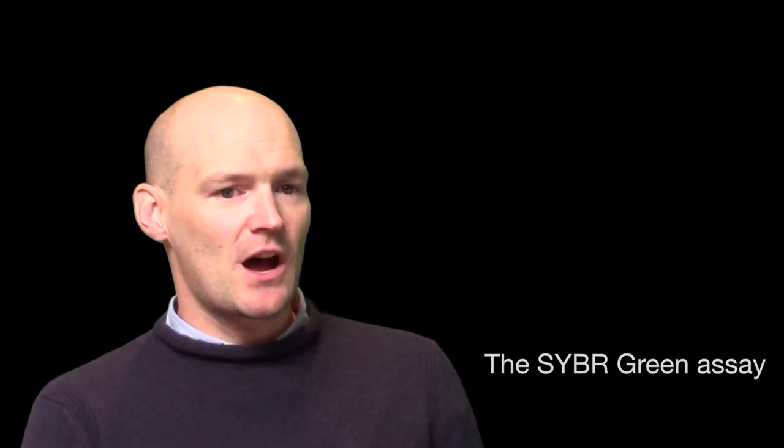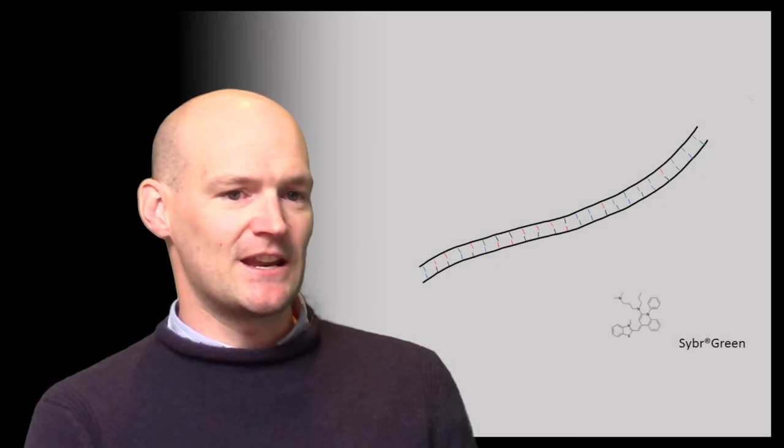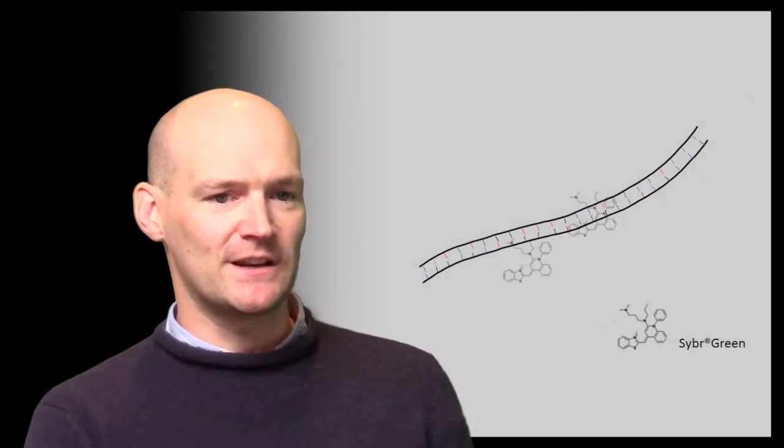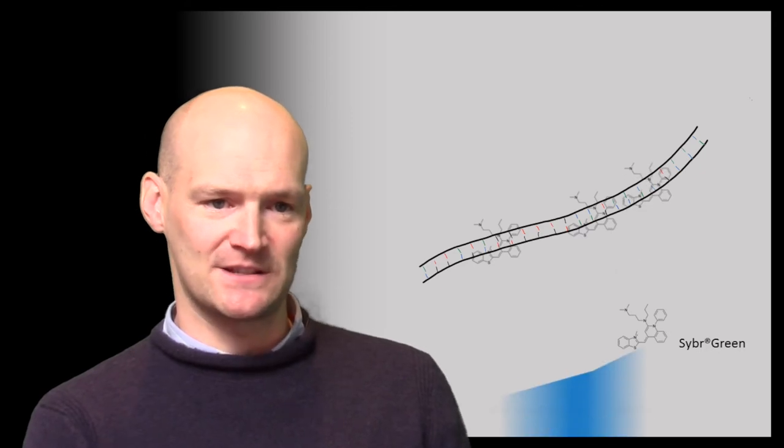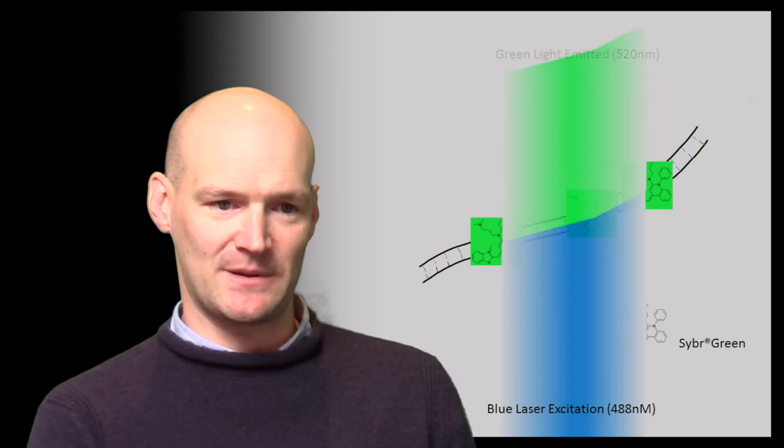The first and simplest is the use of CyberGreen, which is a molecule added to the reaction that binds to DNA non-specifically, but importantly, it only becomes fluorescent when it's bound to the DNA. Therefore, the more amplicon in the sample, the more fluorescent it becomes.